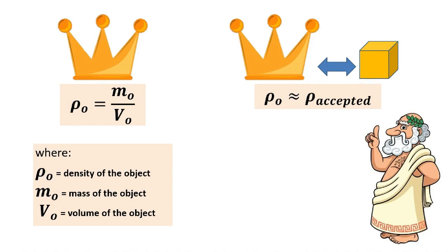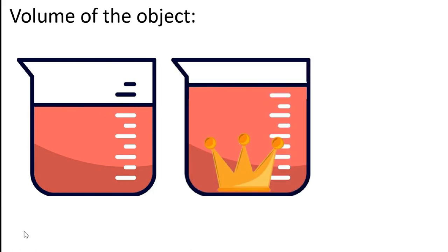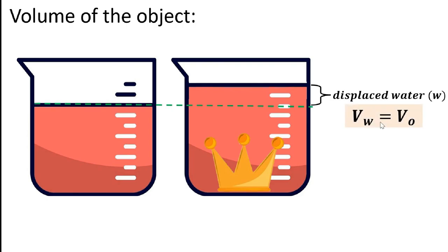The idea of Archimedes is that the mass density of an object is equal to mass over volume. We will compare our computed density to the accepted density of that object, which is constant. In this principle, we can use two ideas for this experiment. First, the volume of the object: if we have a beaker with a certain volume of water, and we submerge an object in the water, the amount of water that increases is equal to the displaced water. The volume of that displaced water is equal to the volume of the object.